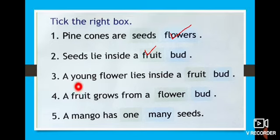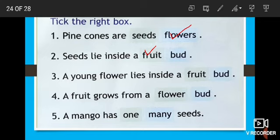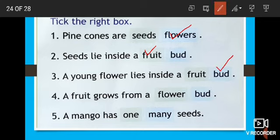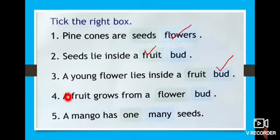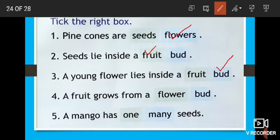And look at the third one. A young flower lies inside a fruit or a bud. The young flower is inside a bud. Very good. And look at the fourth one: a fruit grows from a flower — F-L-O-W-E-R — or a bud — B-U-D. How does the fruit grow? We learned about the guava flower and guava fruit — how we get it. From the flower. A fruit grows from a flower.